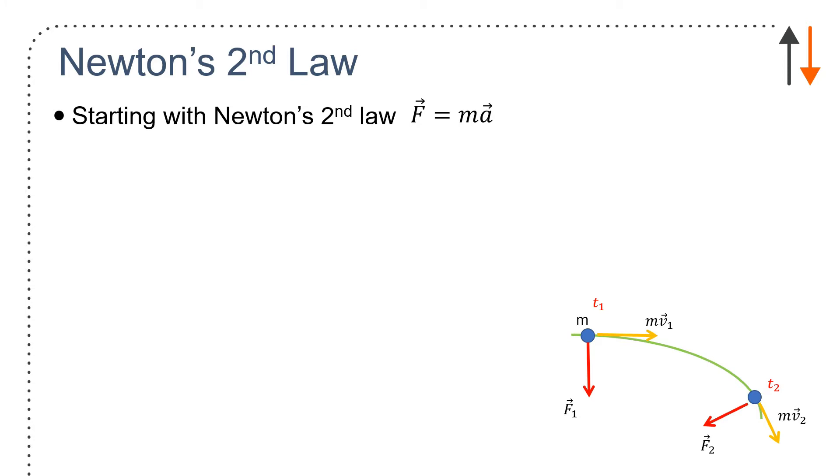So in the diagram here, you see two points of motion, one at time one and another at time two. There's a force associated with it and a velocity associated with it, mv1. We can start with Newton's second law, and that's force equals ma. And if you do that, you can integrate over time one to time two of each of the terms.